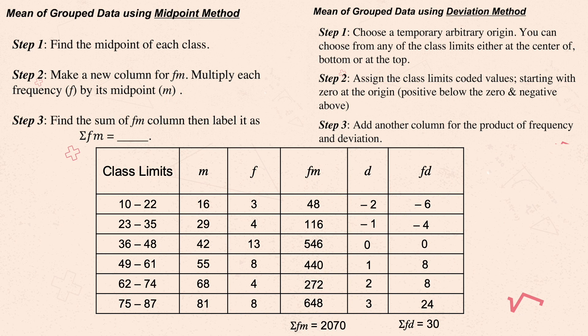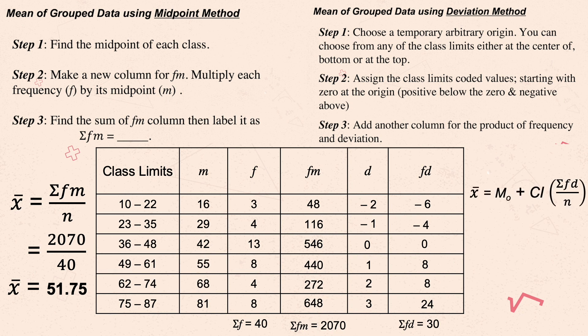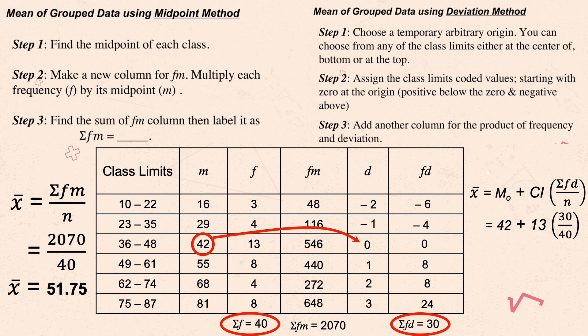Now let's compute the mean using both methods. For the midpoint formula, sigma fm is 2017 and n is 40. Dividing 2017 by 40 gives a mean of 51.75 — always round to the nearest hundredths. For the deviation method, m sub o is 42 (the midpoint of the arbitrary origin), sigma fd is 30, and n is 40. Computing this also gives 51.75.